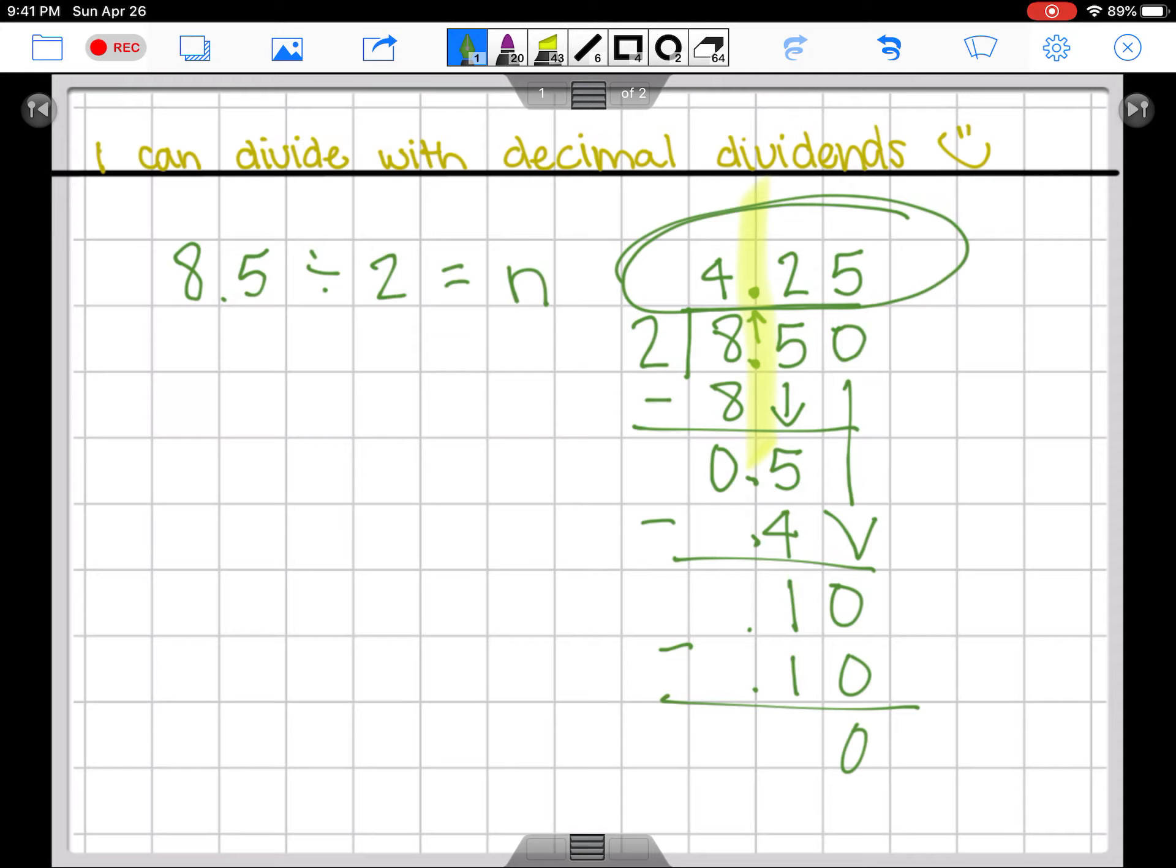We can check our work by multiplying. Remember, we are just going to go backwards. Here's our answer. If we want to check this, this is a divided by b equals c. To check our work, we just need to go in the opposite order: c multiplied by b equals a.